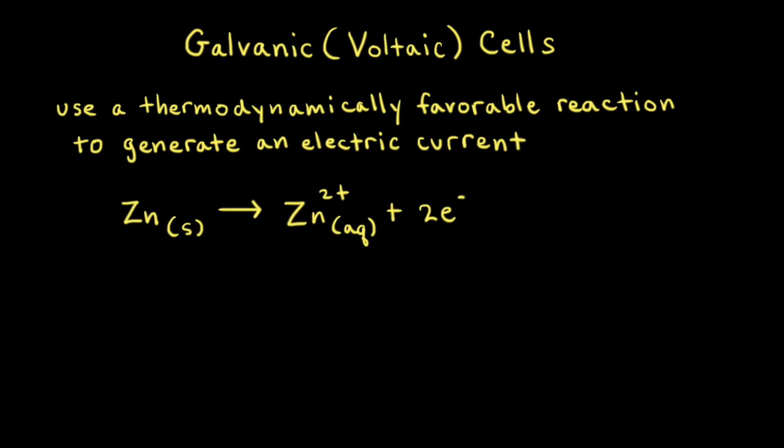Before we look at a diagram of a galvanic or voltaic cell, let's first look at the half reactions that are going to be used in the cell.